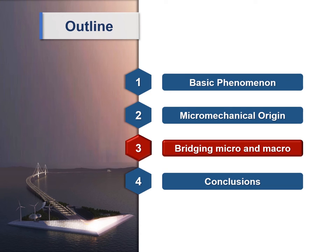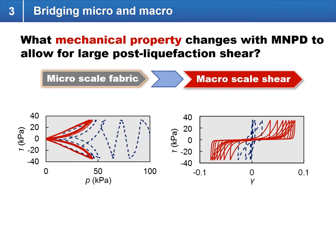Now that we know the micro-mechanical origin of post-liquefaction shear strain, we still need to bridge the gap between micro and macro. We have this micro-scale fabric MNPD, and we know that on a macro scale it manifests as large post-liquefaction shear strain. However, there is still a missing link: the change in MNPD must induce some change in the mechanical property of the soil so as to allow for this large post-liquefaction shear strain.